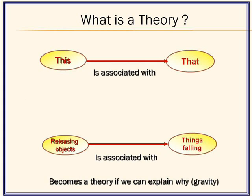So this is associated with that — this is one of the constructs, that is one of the constructs, shown to have a relationship by the arrow between them. For instance, releasing an object, it will fall. So releasing objects is associated with things falling. Now that's a theory if we can explain why things fall, i.e. gravity.